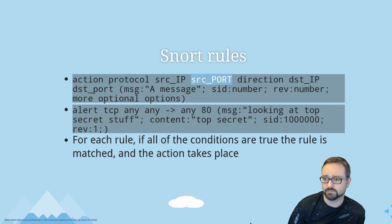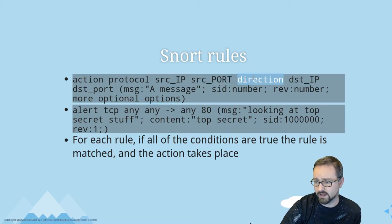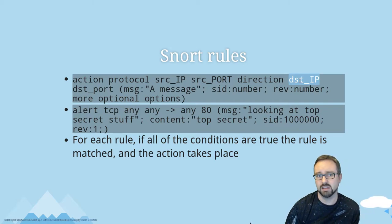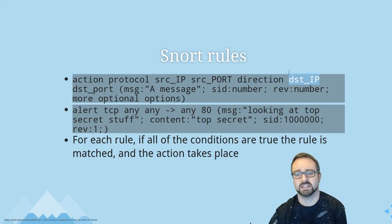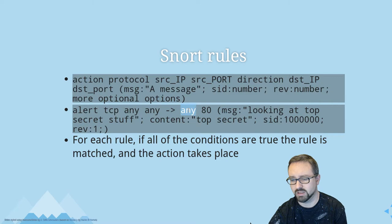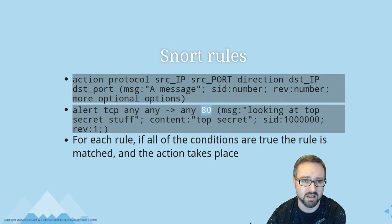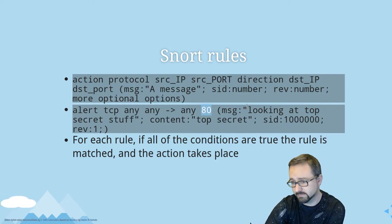Most protocols will use a random number for the source port, or sometimes within a range, or a specific one depending on the protocol — but often you can put any. Then comes the direction, followed by the destination IP address, which is where the packet is being sent. For example, if you have a server, this is the server IP address, and then the destination port — for example port 80 for unencrypted HTTP traffic.